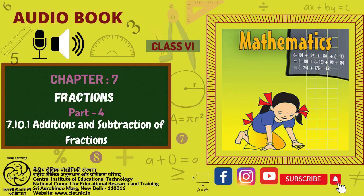3. Fractions can be shown on a number line. Every fraction has a point associated with it on the number line. 4. In a proper fraction, the numerator is less than the denominator. The fractions where the numerator is greater than the denominator are called improper fractions.